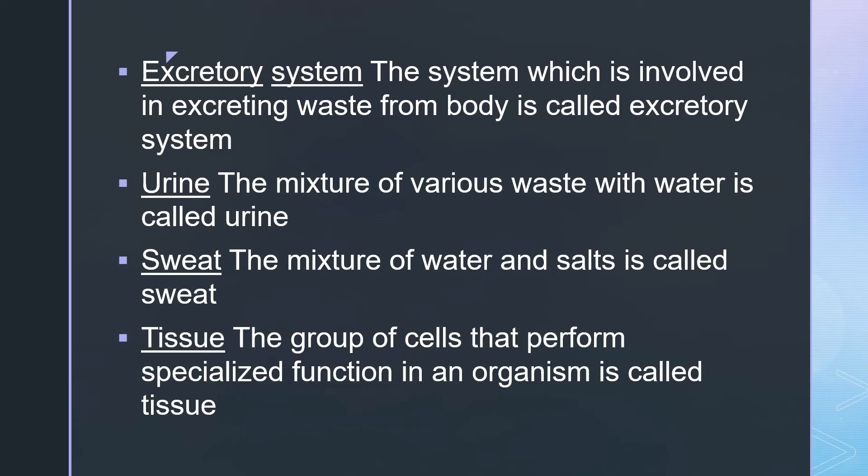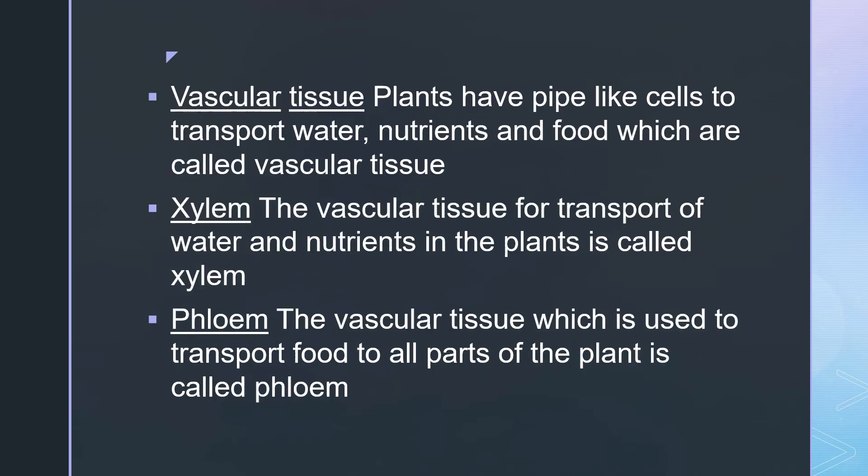Tissue — the group of cells that perform a specialized function in an organism is called tissue. Vascular tissue — plants have pipe-like cells to transport water, nutrients, and food, which are called vascular tissue.